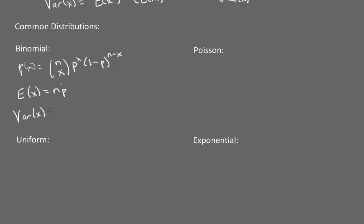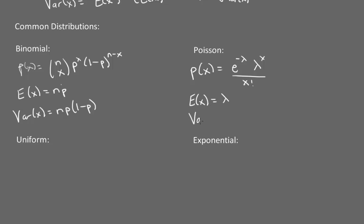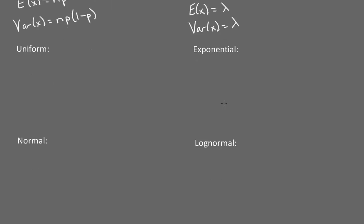The Poisson has a probability function equal to e to the negative lambda, times lambda to the x, over x factorial. The expected value of x is lambda and the variance of x is also lambda — so for the Poisson distribution, the mean is equal to the variance.